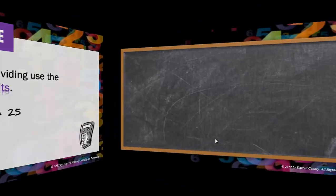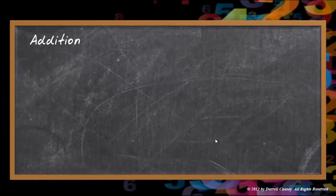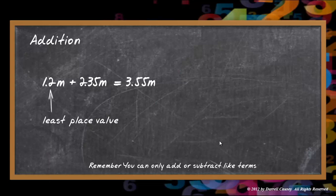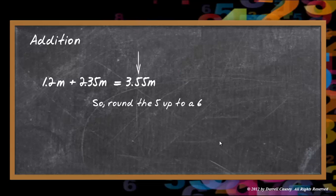Let's do an addition example. We plug and chug those, and that gives us 3.55 meters. In checking our sig figs, our least place value is the tenths. So we're going to round off to the tenths place and the five is going to become a six.